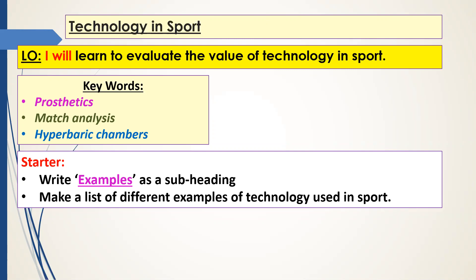The first activity I'd like you to do is write a list with a subheading of examples of any sport where technology is used. Think about the different people involved in sport that use technology. I want you to make a list — aim for at least eight different things. Pause the video here and give yourself a few minutes to make that list.